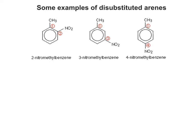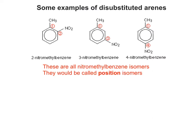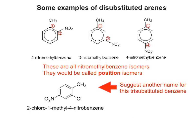Looking at some examples, these three are obviously isomers of each other - they have the same molecular formula with different structural formulae. But because the substituents are in different positions relative to each other, they'd be called position isomers. Can you suggest an alternative name for this trisubstituted benzene? Have a careful think by looking at the way the ones at the top of the screen are named.